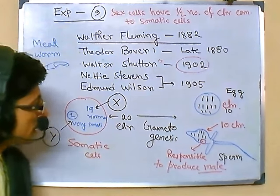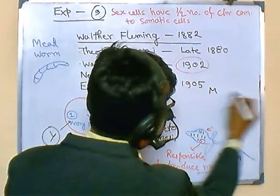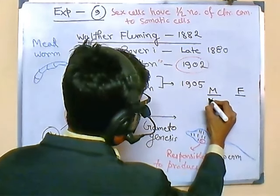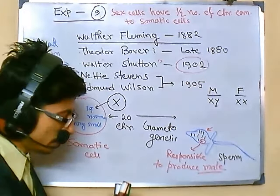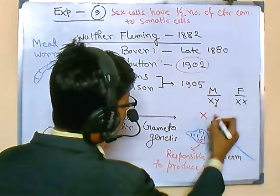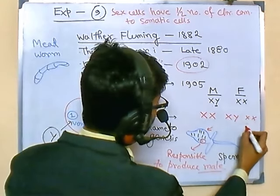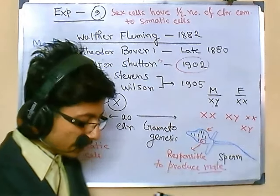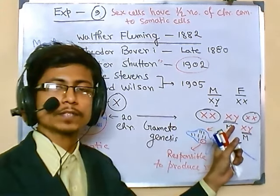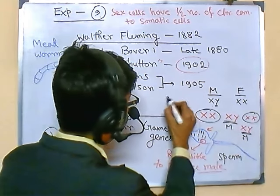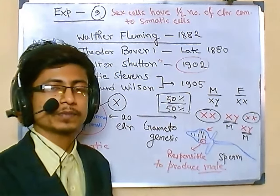For human beings, the male has X and Y because Y is responsible for turning the organism male. If two X chromosomes are present it will be female. So the possible combinations are XX or XY. XX means female, XY means male, and the probability of producing a male or female offspring is 50/50.